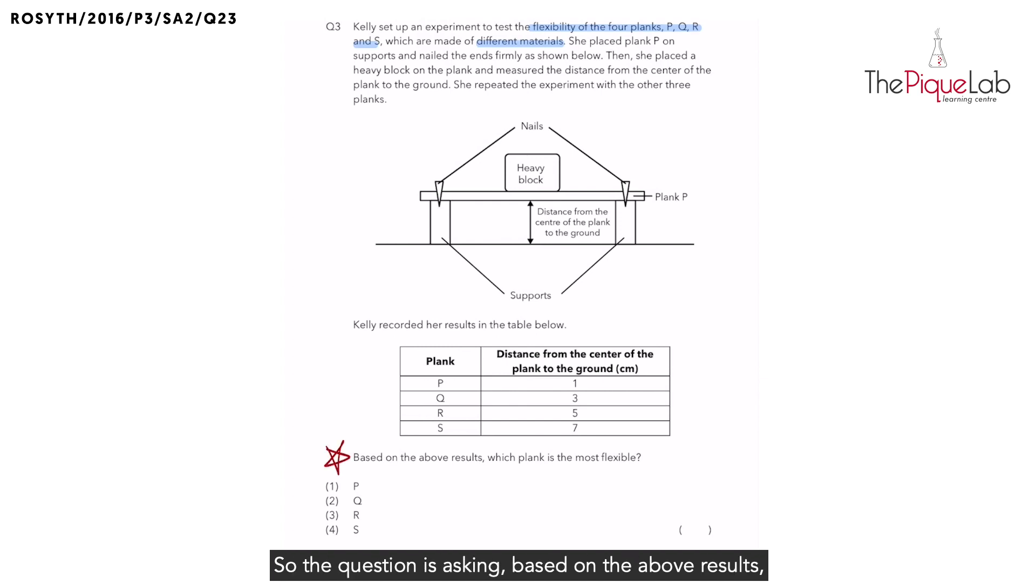So the question is asking, based on the above results, which plank is the most flexible? Most students immediately chose plank S as their answer because 7 cm is the greatest number. So the plank bent the most and therefore it is the most flexible.